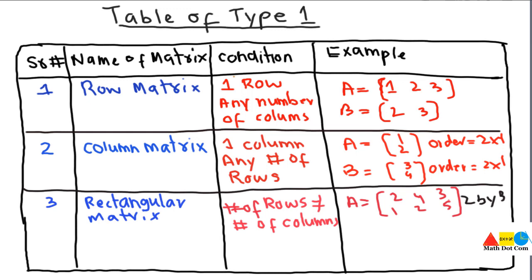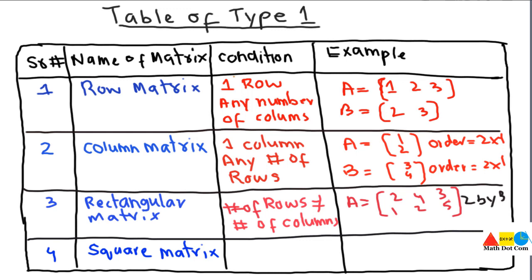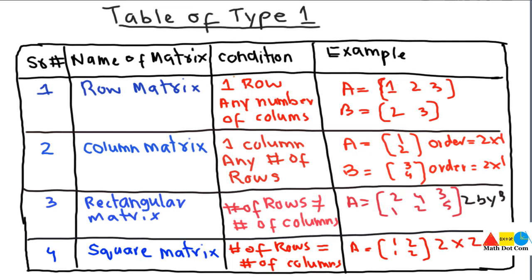The next type is the square matrix, which is opposite to the rectangular matrix. Here, the number of rows must be equal to the number of columns. If this condition is not satisfied the matrix is rectangular; if it is satisfied the matrix is square. For example, a matrix with 2 rows and 2 columns is a square matrix because the number of rows equals the number of columns.